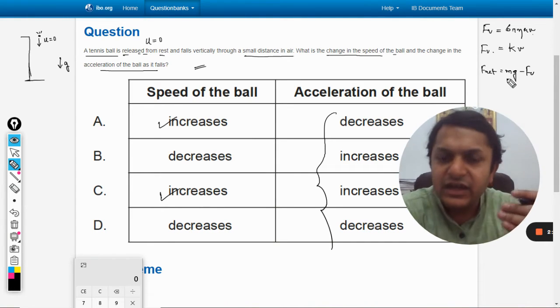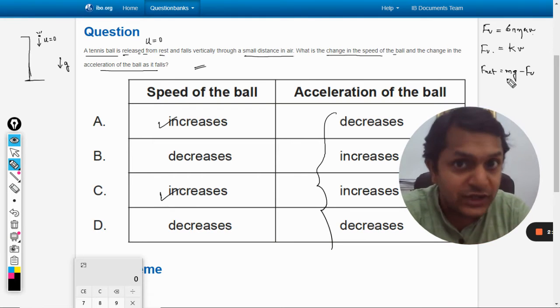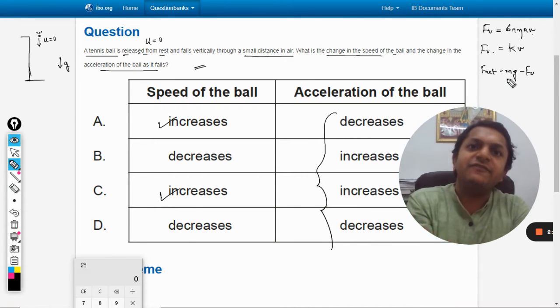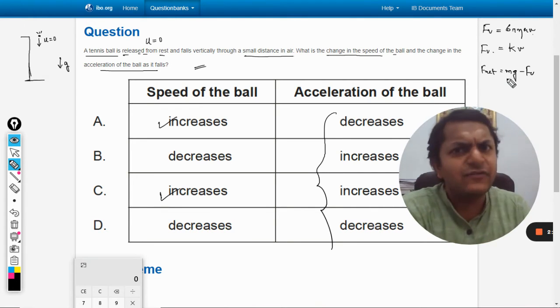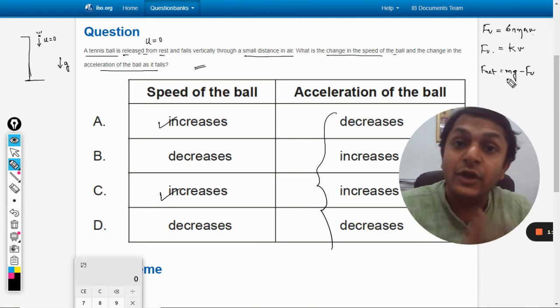Now as the velocity is increasing with respect to time, the f_v is also increasing, it means the f net is reducing. Initially f net is mg when velocity is zero, but after some time f net is mg minus f_v.